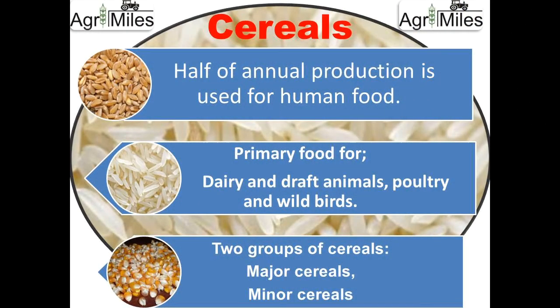If we talk about consumption, almost half of the annual production is used for human food. These cereals are also the primary food for dairy and draft animals, poultry, and wild birds.